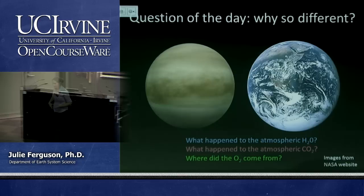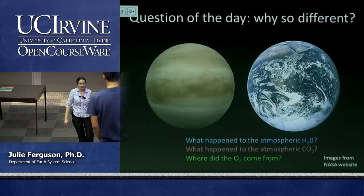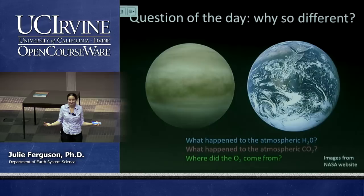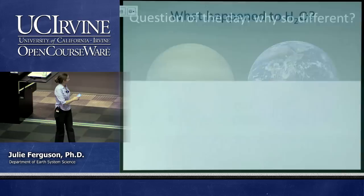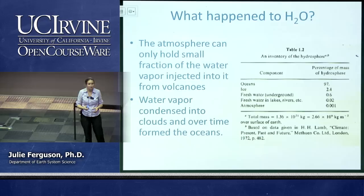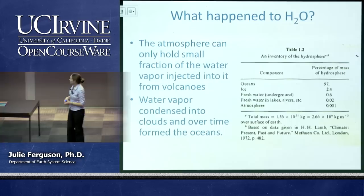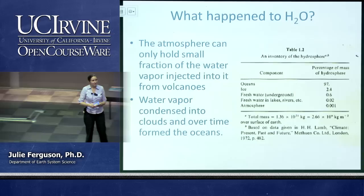The atmospheric water vapor went to form the oceans. Volcanoes put water vapor into the atmosphere, and over time as our planet cooled down after its formation, the amount of water vapor couldn't be held by the atmosphere and it condensed out, building up to form our oceans. What would happen if we increased our planet's temperature again? The amount of water vapor in our atmosphere would increase again — so temperature plays an important role in how much water vapor is in the atmosphere.